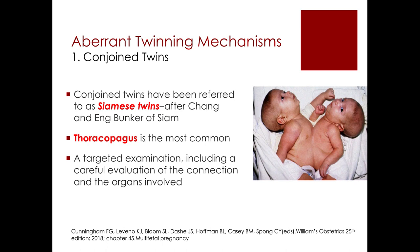Conjoined twins, previously referred to as Siamese twins after Chang and Eng Bunker of Siam, are most commonly thoracopagus — joined at the thorax. In cases of conjoined twinning, a targeted examination including careful evaluation of the connection and the organs involved is very important.